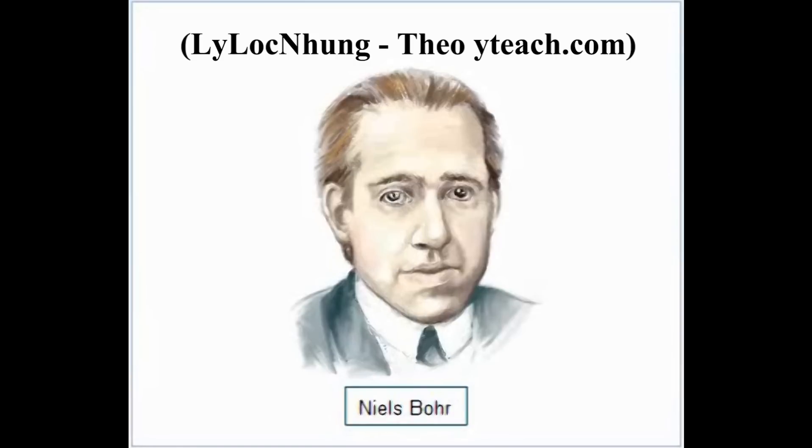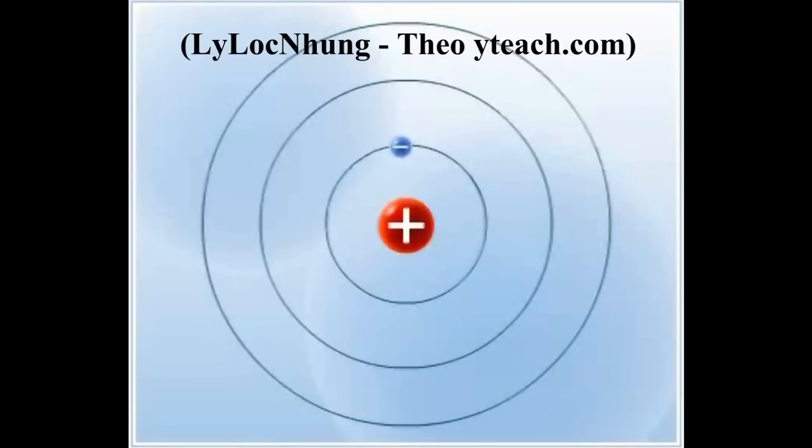In 1913, Niels Bohr proposed the atomic model that explained the stability of atoms, as well as linking Planck's quantum ideas to the line emission spectrum of hydrogen.